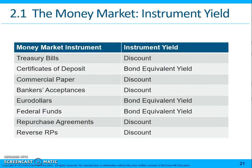Finally, this chart shows how different instruments are calculated. Treasury bills, commercial paper, bankers' acceptances, and repos are all calculated using the discount method. CDs, Eurodollars, and federal funds are calculated using the bond equivalent yield. These are things you need to know if you're going to be dealing with these types of securities.